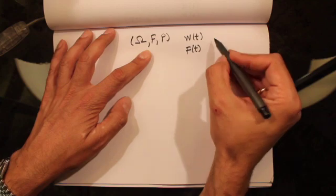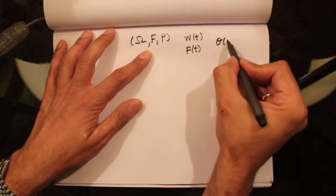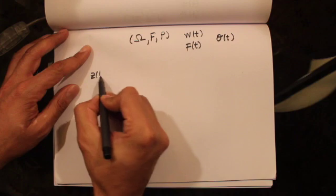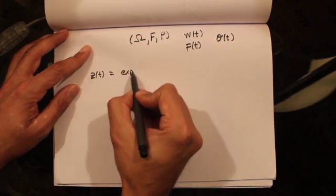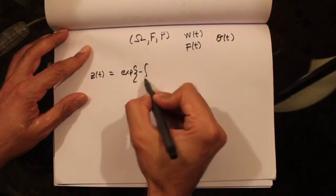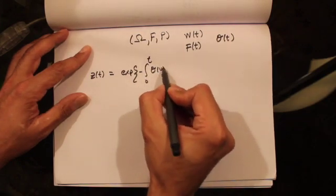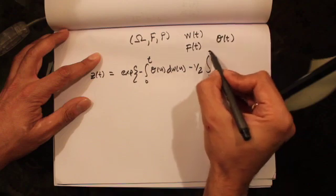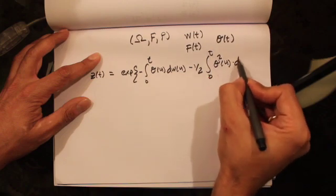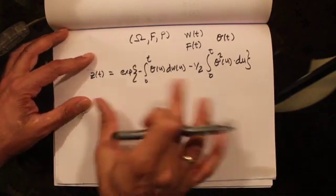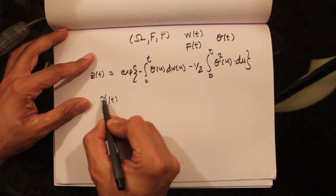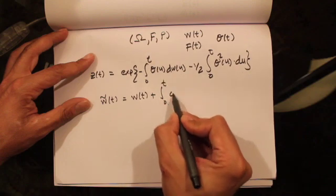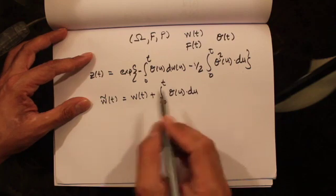Further, we said that we also have an adapted process given by theta(t). We then defined Z(t) as the exponential function of minus the integral from 0 to t of theta(u) dW(u), minus one-half the integral from 0 to t of theta-squared(u) du. And then we had another process W-tilde(t) that was equal to W(t) plus the integral from 0 to t of theta(u) du.